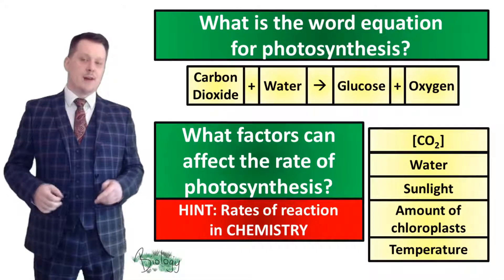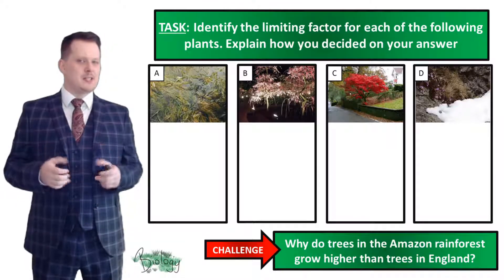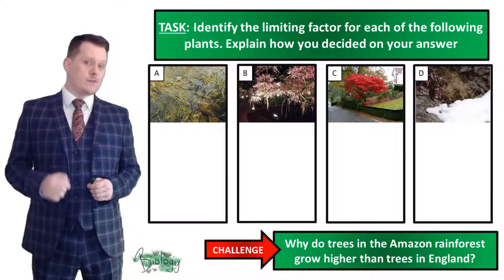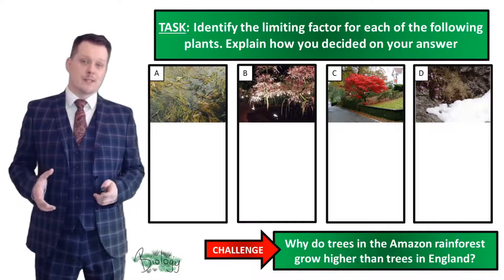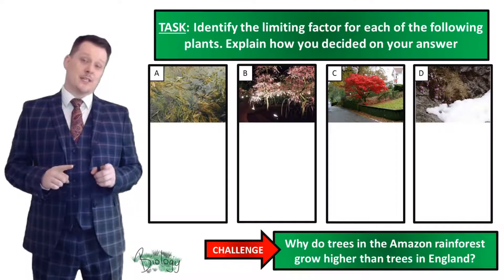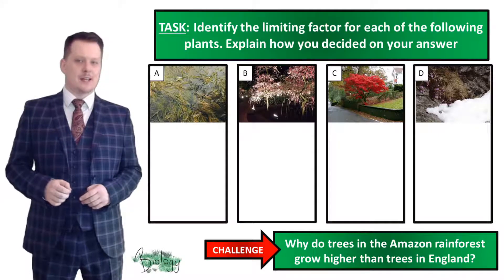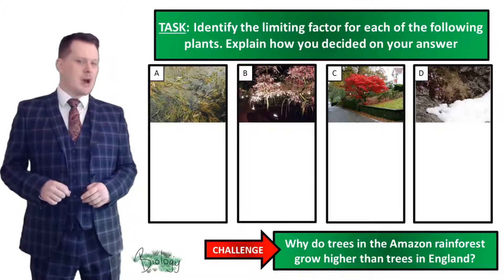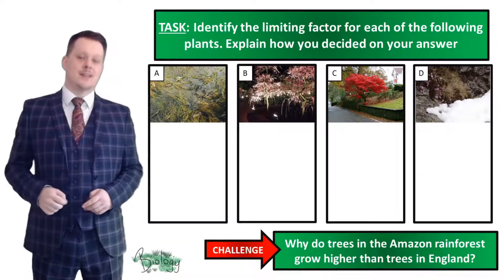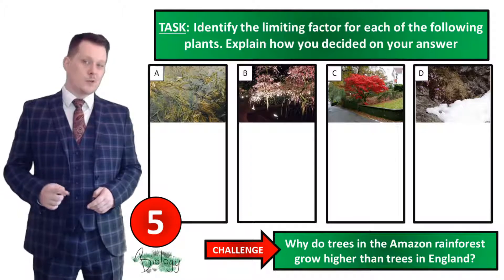With that in mind, let's look at the first task on our worksheet. We have four plants and in each picture there is something which is limiting the rate of photosynthesis. Identify what factor is limiting the rate of photosynthesis and explain how you decided on your answer. For a challenge, explain why trees in the Amazon rainforest grow higher than trees in England. Pause the video if you need more time, and when you're finished we'll go through the answers together.